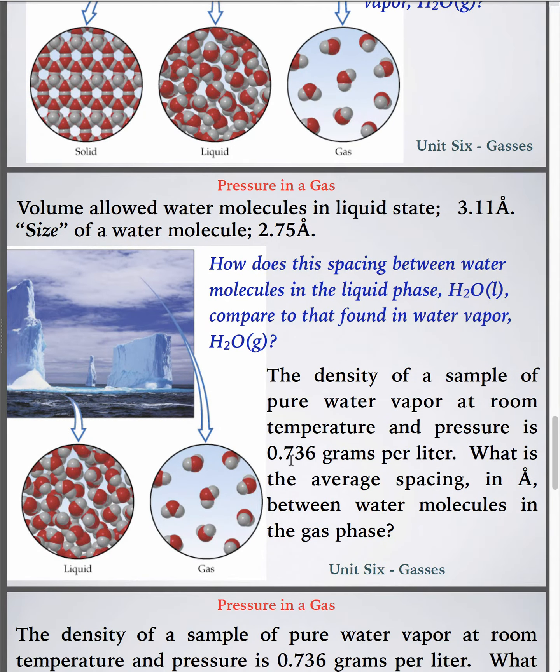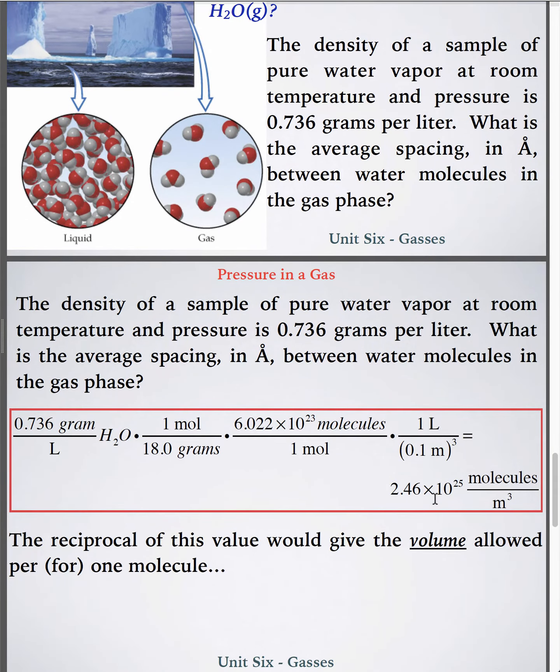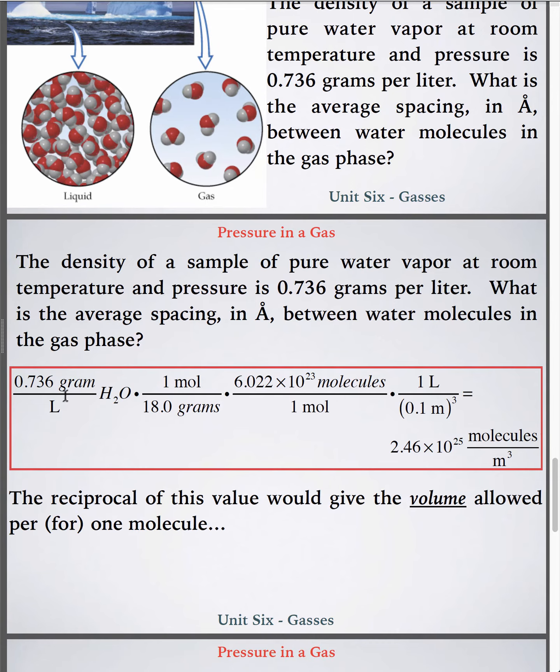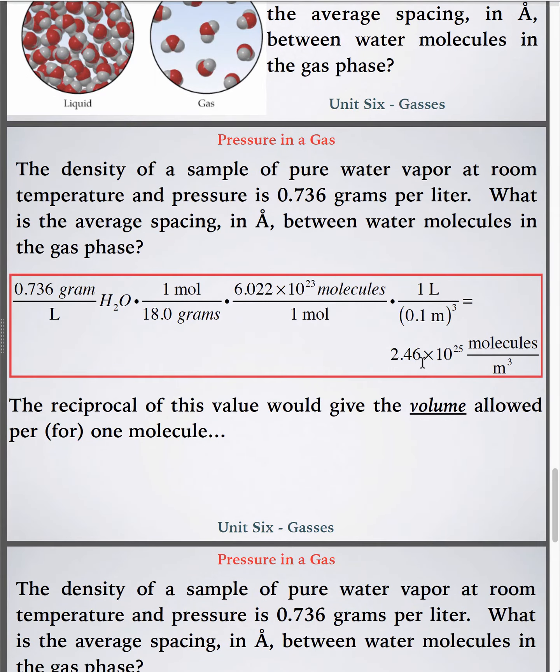Let's say the density of water vapor is about 0.736 grams per liter, not grams per milliliter. And then we take that and run with it in a very similar calculation to what we just did above, where I take the grams per liter and change them into moles per liter, a mole of particles, 6.022 times 10 to the 23, and take the liter and change it into cubic meters. That gives me the molecules per cubic meter in a sample, molecules of water vapor.